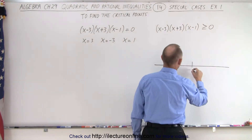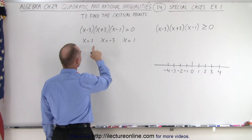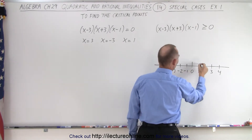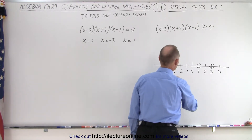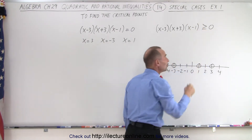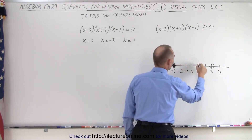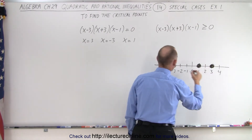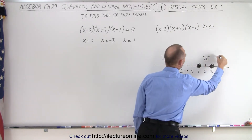Let's put those on the number line. The critical points are negative 3, 1, and 3. Notice we don't just have greater than zero — we have greater than or equal to zero, which means the endpoints are included, so we make them solid circles. We now have four regions: region 1, region 2, region 3, and region 4.